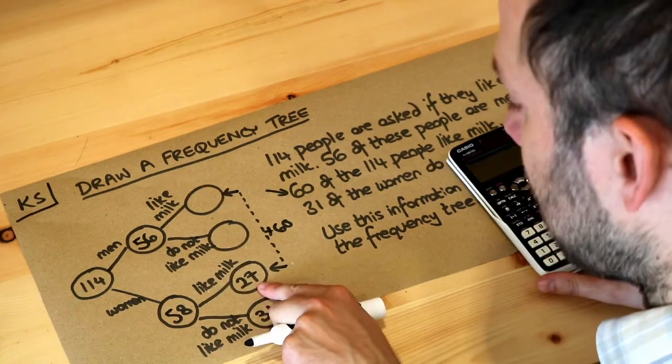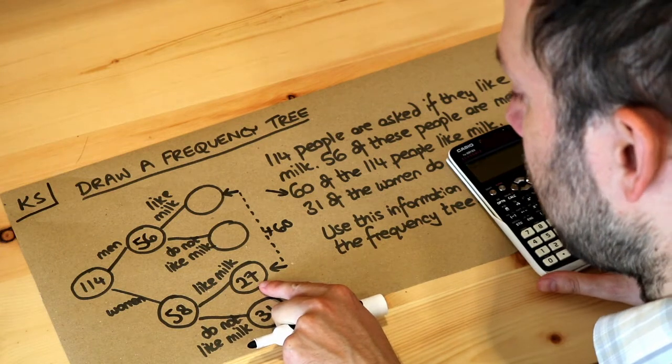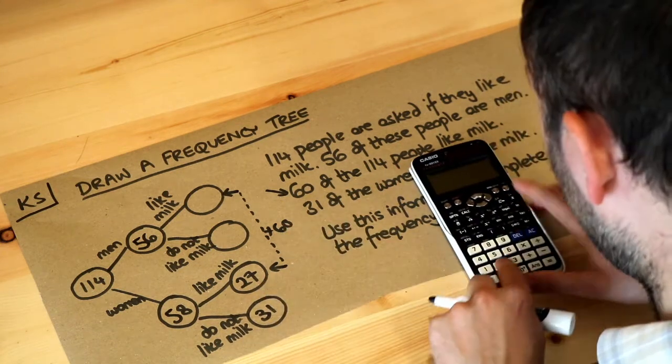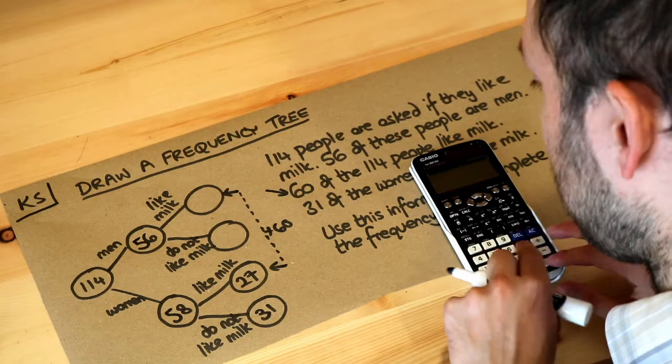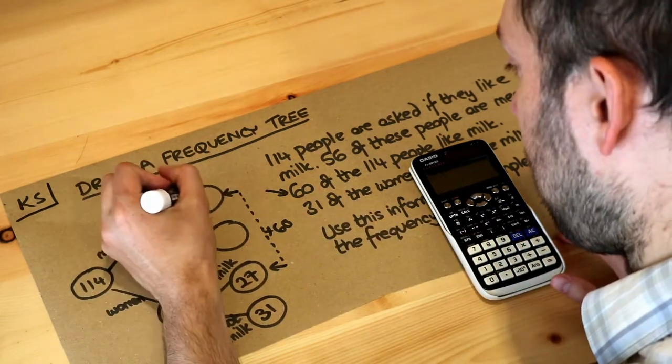Ah, but we already know there's 27 women who like milk, so if you subtract that from 60, 60 minus 27, that gives us 33 here.